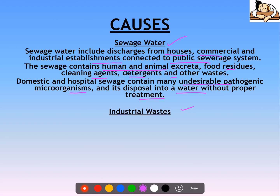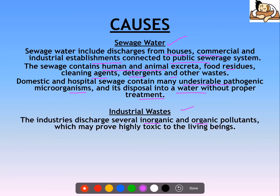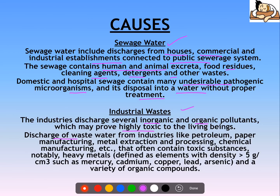Industrial waste contains inorganic and organic pollutants which might be highly toxic to organisms. Discharge of wastewater from industries like petroleum, paper manufacturing, metal extraction, etc. contains toxic substances like heavy metals such as mercury, cadmium, copper, and a variety of organic compounds. These are really toxic and cause a great deal of water pollution.